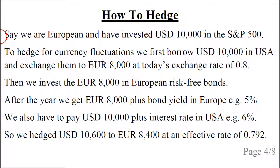Let's say we are European and we invest 10,000 US dollars in the S&P 500. To hedge for currency fluctuations, we first borrow 10,000 US dollars and exchange it to 8,000 euros at today's exchange rate of 0.8. We then invest the 8,000 euros in European risk-free bonds. After one year we get 8,000 euros plus the bond yield in Europe, which in this example is 5 percent.